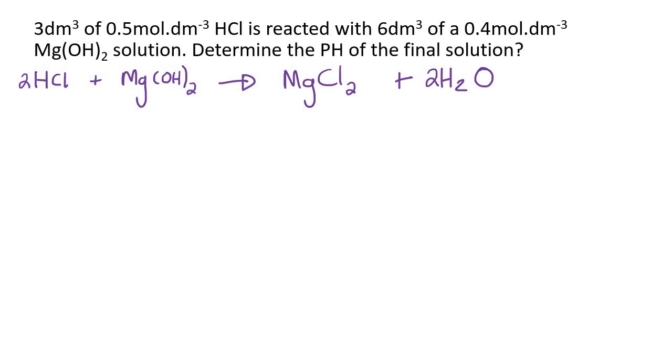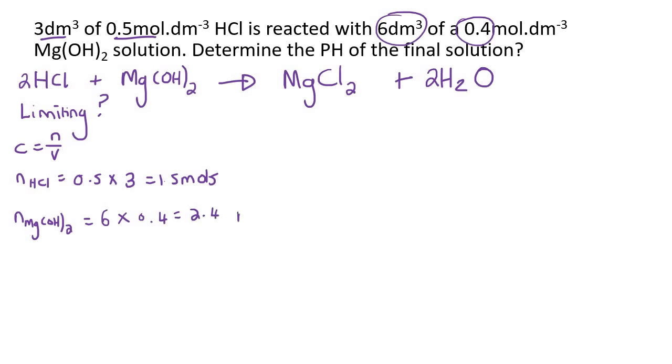Now what we need to do is we need to try work out the limiting reactant. Which one is limiting? Because then we can try to see how much excess of the other one will there be. So we are given a volume and a concentration of HCl. So we can work out using this formula, we can work out the moles of HCl by saying concentration multiplied by volume. So that would be 0.5 multiplied by 3, which is going to be 1.5 moles. Then we could also work out the moles of MgOH2, which will be 6 multiplied by 0.4. And that's going to give us 2.4 moles.